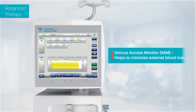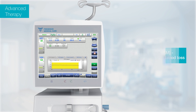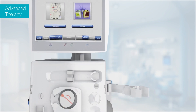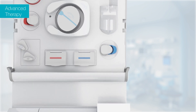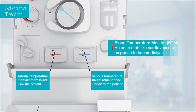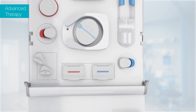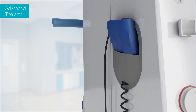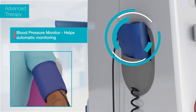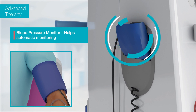The venous access monitor helps in minimizing the risk of external blood loss. The blood temperature monitor helps in stabilizing the cardiovascular response to haemodialysis and ultrafiltration. The blood pressure monitor automatically monitors blood pressure during dialysis.